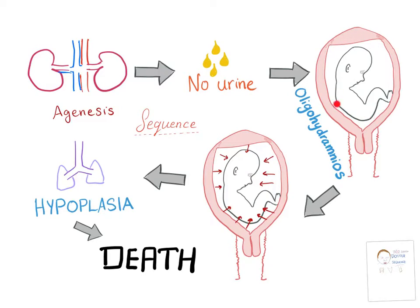The amniotic fluid, which surrounds the baby and provides nutrition and protection, will be decreased in amount because amniotic fluid contains urine. Since the source of urine is not there, the amniotic fluid is decreased in volume.